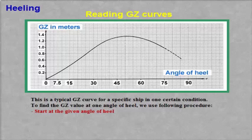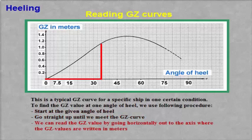Start at the given angle of heel. Go straight up until we meet the GZ curve. We can read the GZ value by going horizontally out to the axis where the GZ values are written in meters.